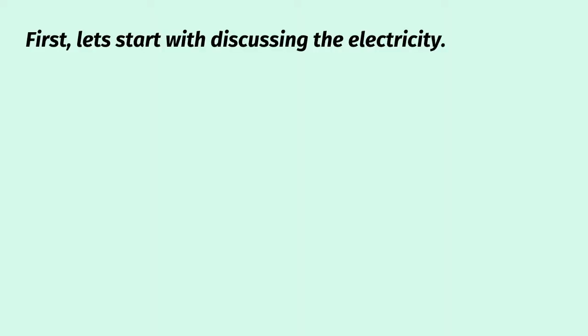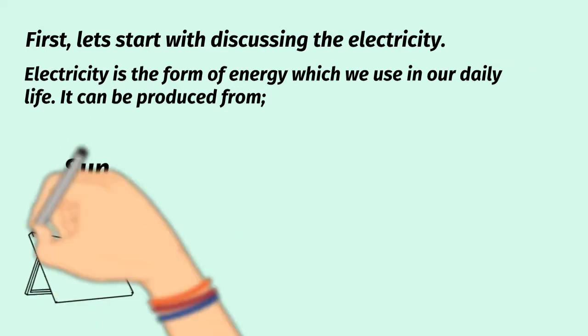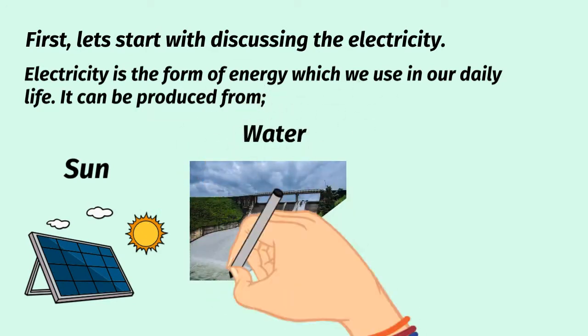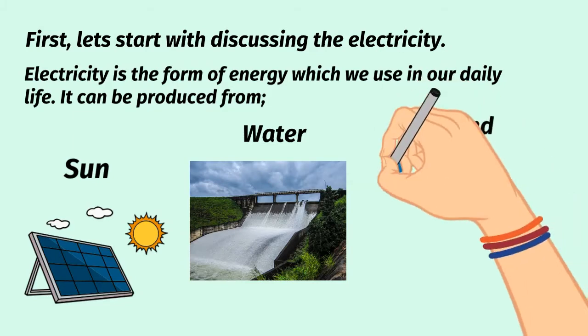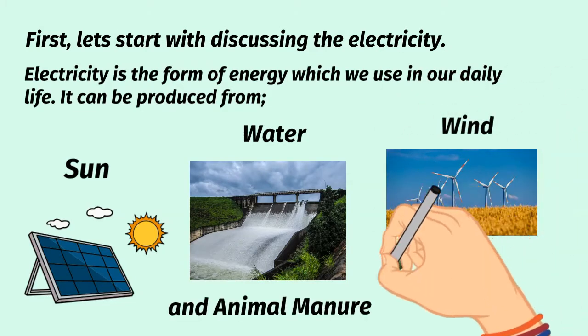First, let's start with discussing electricity. Electricity is the form of energy which we use in our daily life. It can be produced from sun, water, wind, and animal or manual power.